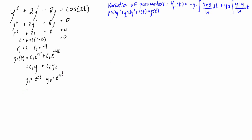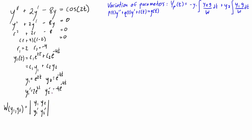Now to find W — the Wronskian of y₁ and y₂ — we need the derivatives: y₁′ = 2e^(2t) and y₂′ = −4e^(−4t). The Wronskian is the determinant of the 2×2 matrix with entries y₁, y₂ in the first row and y₁′, y₂′ in the second row. This simplifies down to −6e^(−2t).